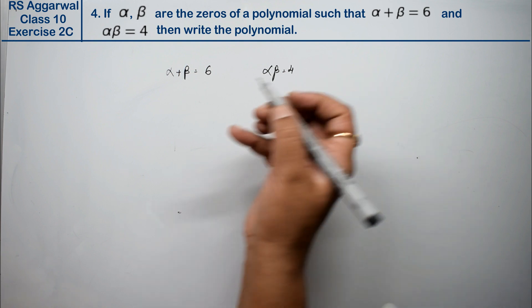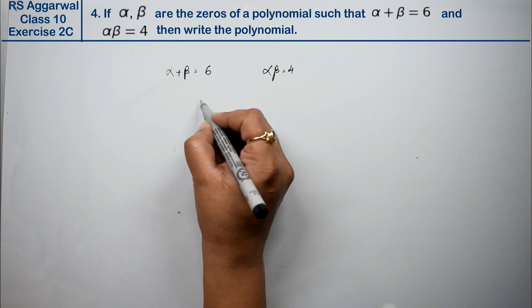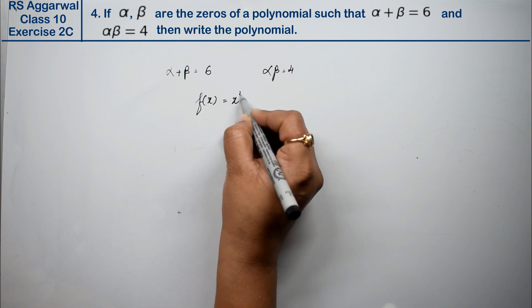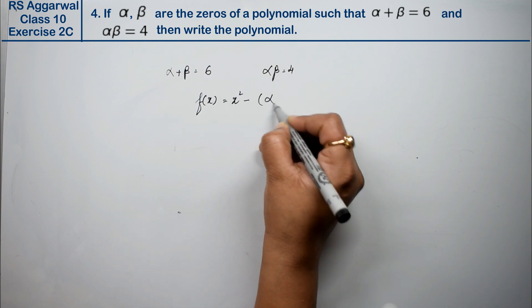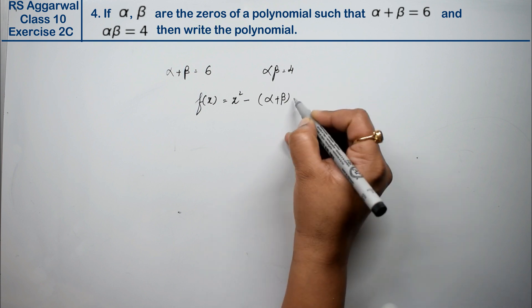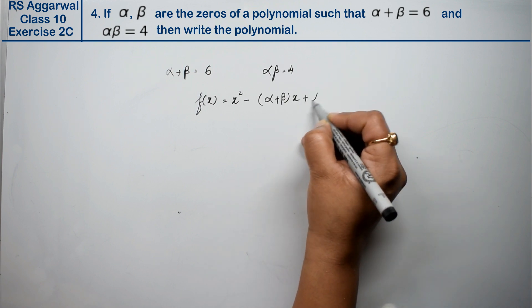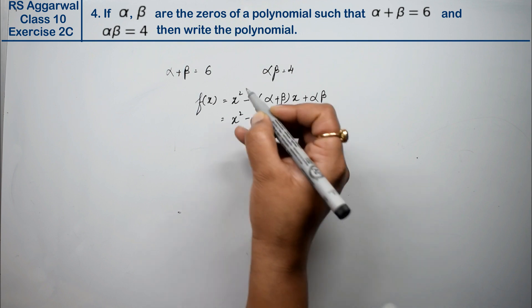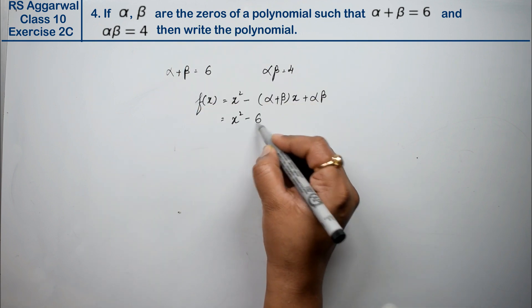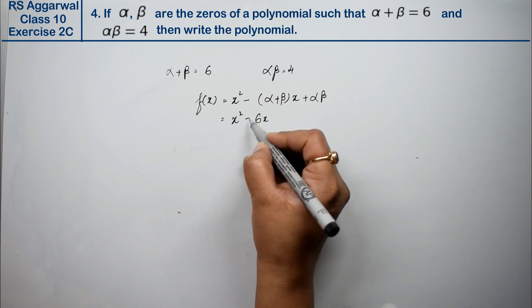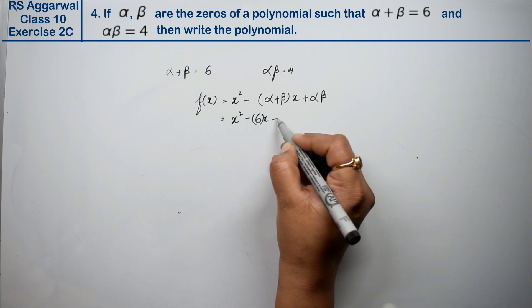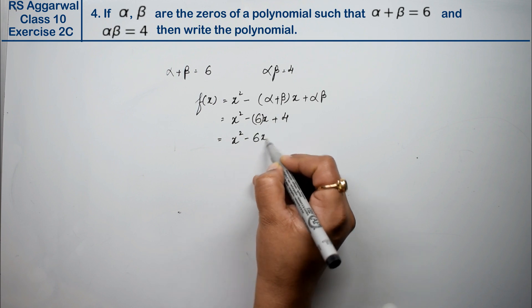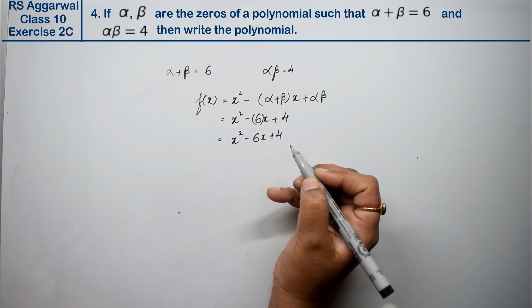How will we write it? Let's see. The expression was: f(x) is x² minus (α + β)x + αβ. This was it. x² minus α + β, what was it? 6. It became 6x. You can put 6 in brackets. Plus 4. Now if you open the bracket, what is it? x² minus 6x plus 4 is the answer.